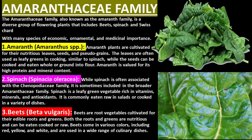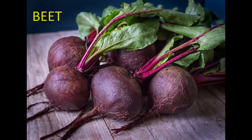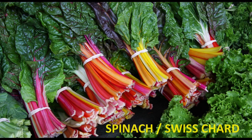The Amaranthaceae family, also known as the amaranth family, is a diverse group of flowering plants that includes beets and spinach.